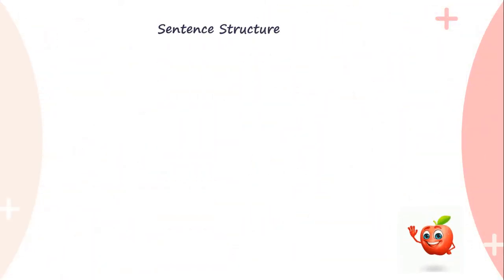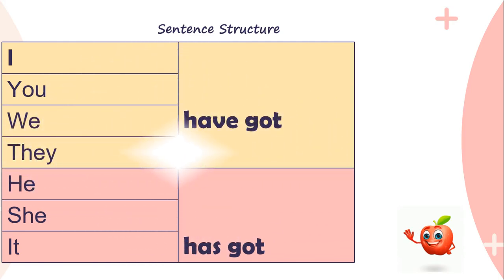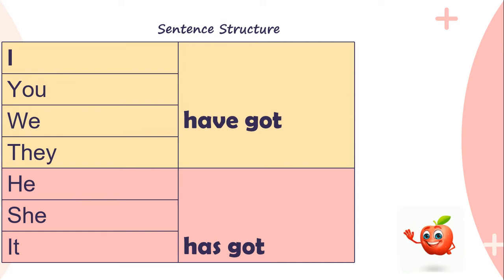When do we use 'has got' or 'have got'? For the pronouns I, you, we, and they — I and you are special, and we and they are plural pronouns — we will use 'have got'. For he, she, and it — singular pronouns — we will use 'has got'.